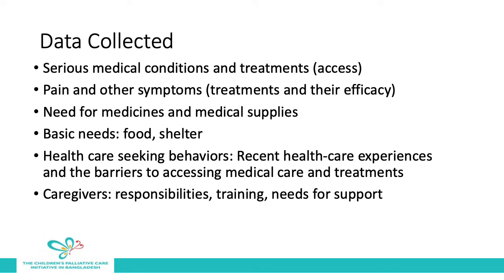The data we collected from these interviews included: the type of serious medical condition and treatment the patient was receiving and whether they could access those treatments; the presence of pain and other symptoms, including treatments and their efficacy; the individual's need for medicines and other medical supplies; basic needs such as food and shelter and whether these were adequately met; health care seeking behaviors and recent health care experiences; barriers to accessing health care and treatment. For caregivers, we focused on their caregiving responsibilities, training they had or needed, and their support needs.